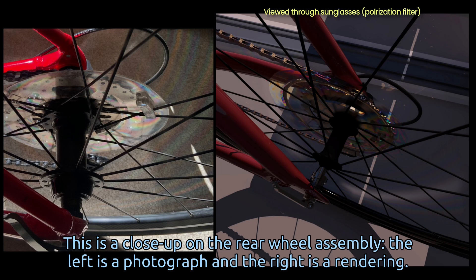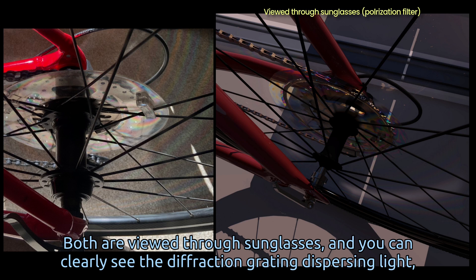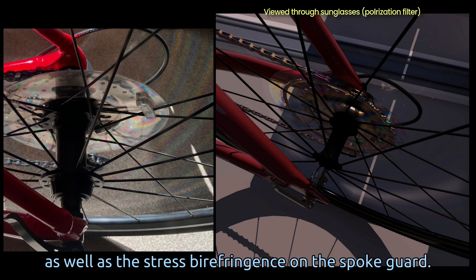This is a close-up on the rear wheel assembly. The left is a photograph, and the right is a rendering. Both are viewed through sunglasses, and you can clearly see the diffraction grating dispersing light, as well as the stress birefringence on the spoke guard.